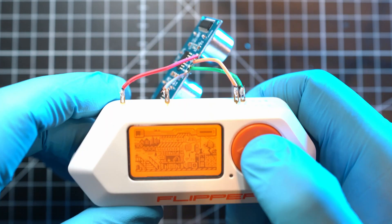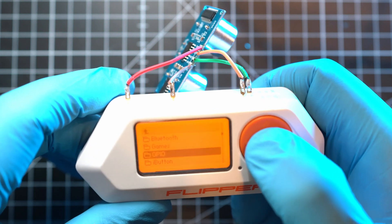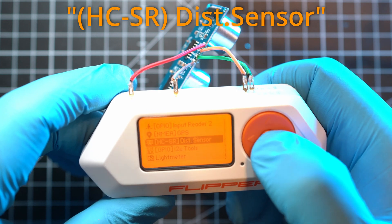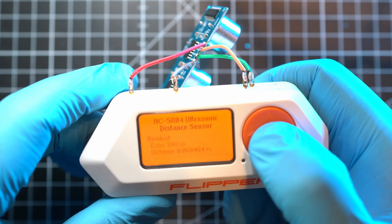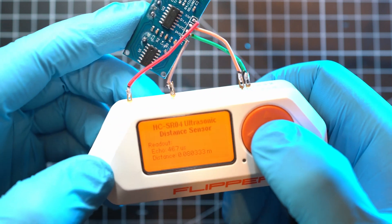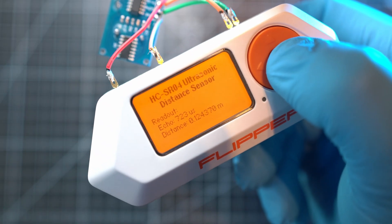Let's test it out. Go to applications then GPIO and look for HC-SR dist sensor. Open it and press middle button as the middle button is triggering new measurements, and all is working just fine.